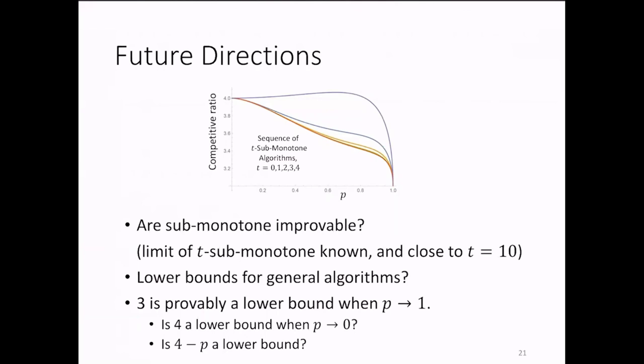One can show easily that when P equals 1, or when P tends to 1, 3 is the lower bound to the competitive ratio. At the same time, all our algorithms have competitive ratio 4 when P tends to 0. Is that the lower bound? Is that the matching lower bound for any algorithm?